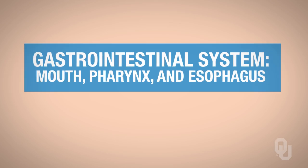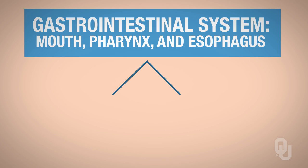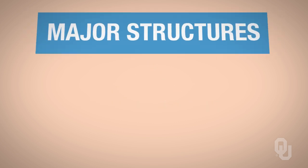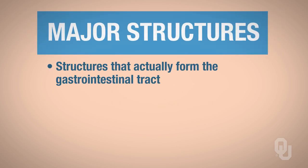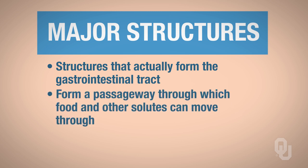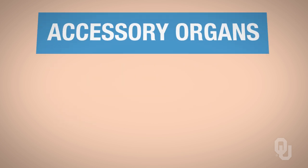The gastrointestinal system has two major divisions. There are the major structures, which is what this part of the notes is going to focus on — the structures that actually form the gastrointestinal tract, forming a passageway through which food and other solutes can move. The other component of the digestive system is the accessory organs.